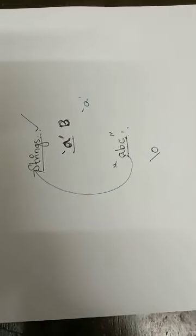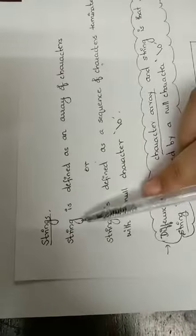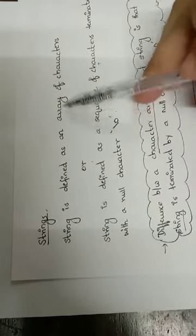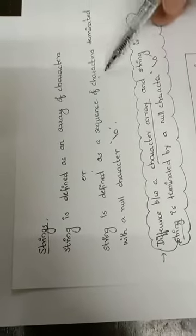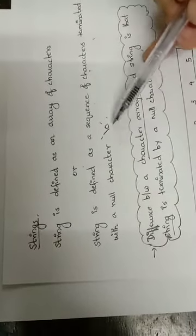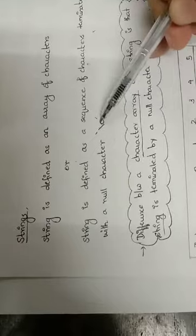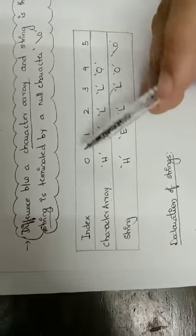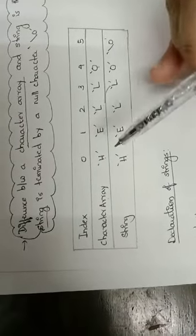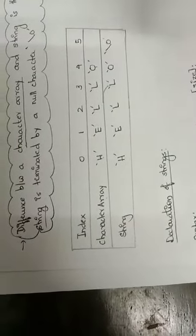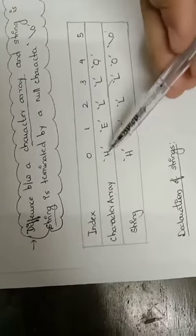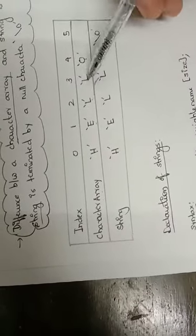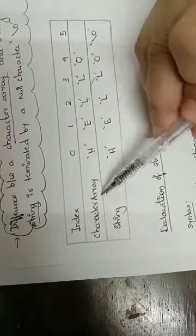So if I tell you the definition of a string: a string is defined as an array of characters, or a string can be defined as a sequence of characters terminated with a null character, that is '\0'. For example, consider this array. If I want to store the word 'hello', it has basically five characters — H, E, L, L, O. If it is a character array, it will be stored like this: H, E, L, L, O.